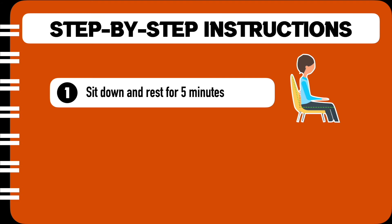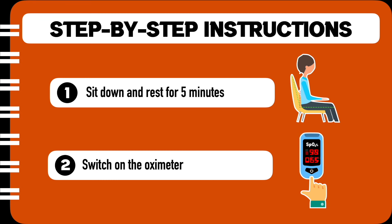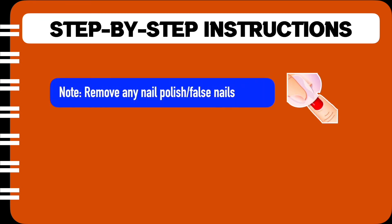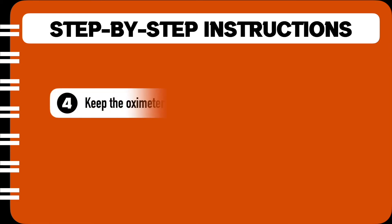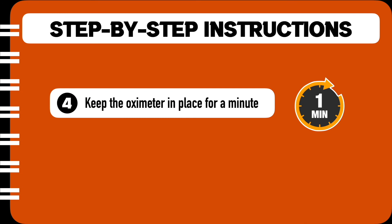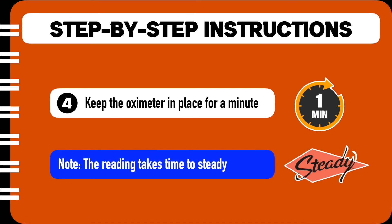Step one: sit down and rest for five minutes. Step two: switch on the oximeter. Before step three, there is a note which says: remove any nail polish or false nails, because this will interfere with the reading. Step three: place the oximeter on your middle or index finger. Step four: keep the oximeter in place for a minute. A note after step four explains that the reading takes time to steady, and hence the oximeter has to be kept in place for more than a minute.